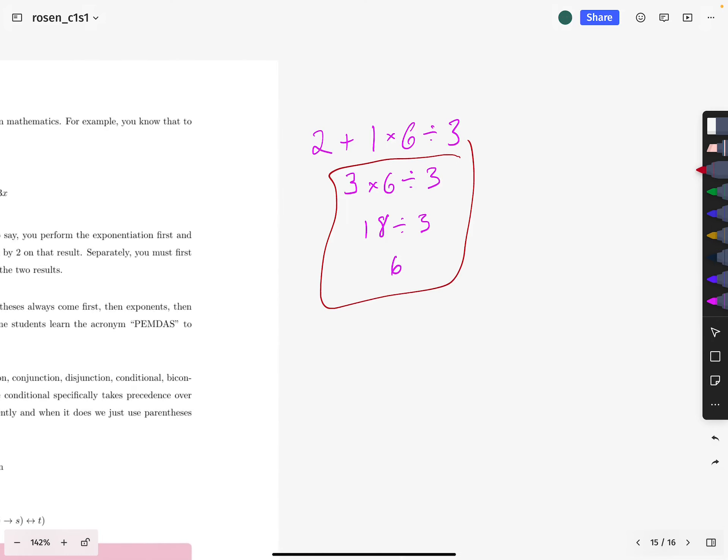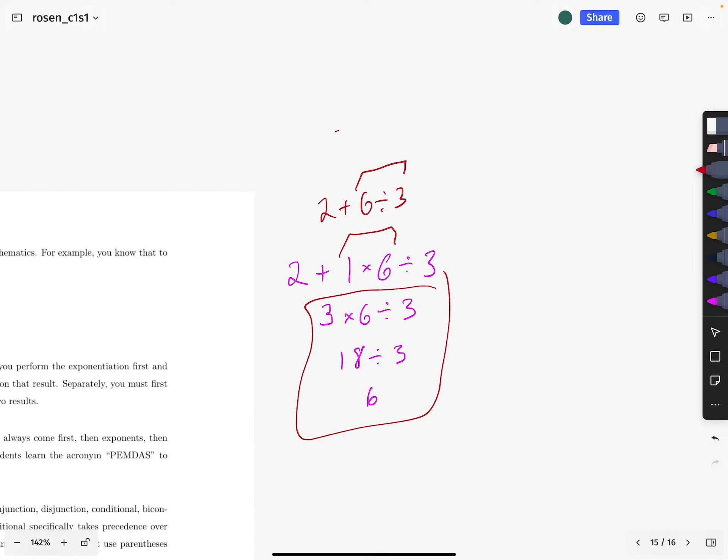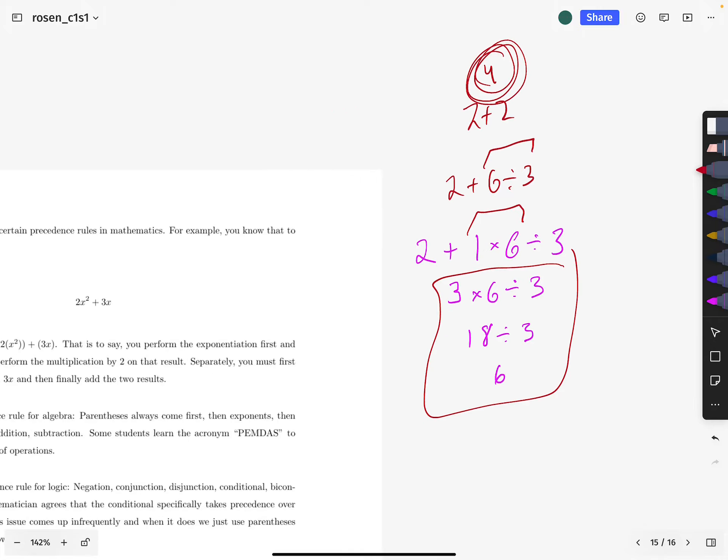So math has an order of operations. The correct order of operations, by the way, is that we would do multiplication first so that this would really become two plus six divided by three. And then we would do division next. So this would become two plus two. And then this is four. And that's the correct order using the usual order of operations in mathematics.